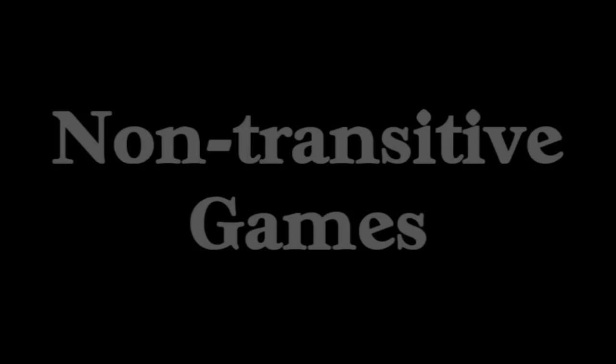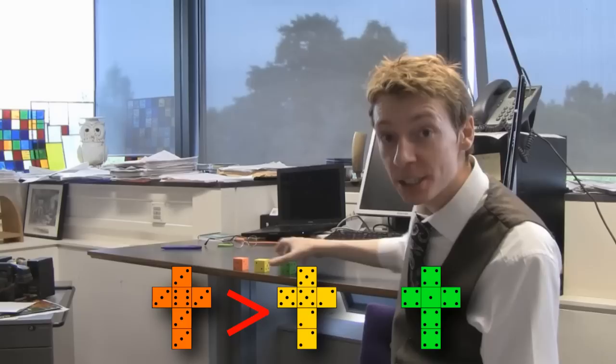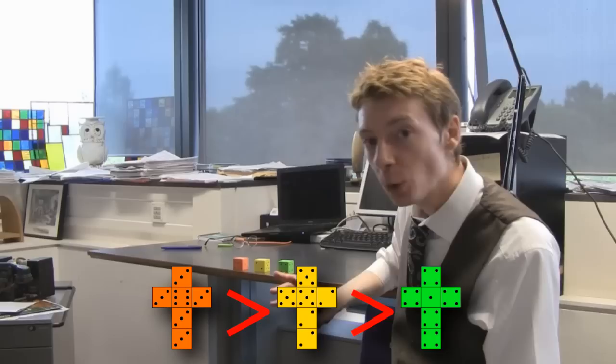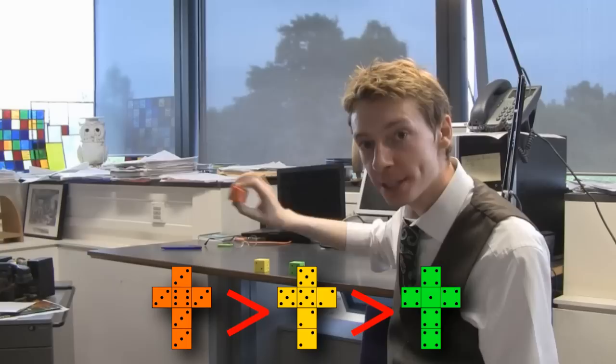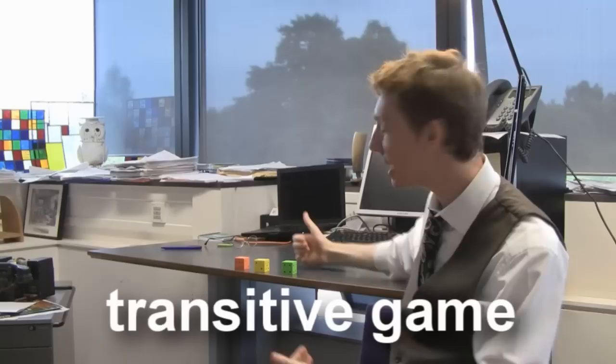What David didn't know, what you didn't know, is that whatever dice David picks, I can always pick a dice with a better chance of beating yours. The red dice will beat the yellow dice in the long run. The yellow dice, in fact, beats the green dice. So, you might expect then that the red dice will beat the green dice. The red dice is the strong one, the green dice is the weak one, so we would think that the red dice beats the green dice. And if this was true, this would be called a transitive game, because the property is transferred via the yellow dice in the middle.